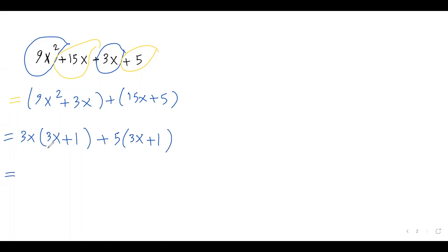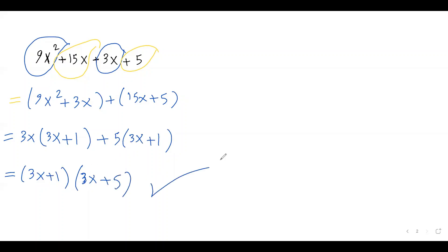Now I can factor out the common factor. Between these two terms, 3x plus 1 is the greatest common factor. I factor that out: 3x plus 1. The first term divided by 3x plus 1 leaves 3x, and the second term divided by 3x plus 1 leaves plus 5. This is our answer. That's how we factor a polynomial expression with four terms using the factor by grouping method.